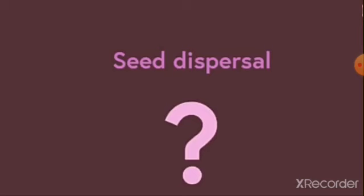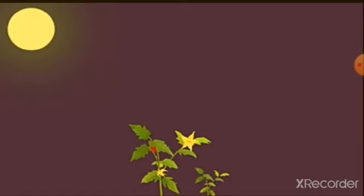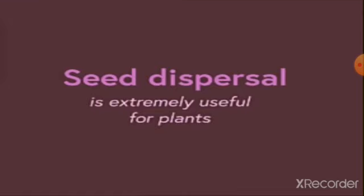Now, tell me, why do we need dispersal of seeds? What will happen if the seed from parent plant gets planted near it? Being near the parent plant will affect the growth and development of both plants. Why so? The two will start competing for sunlight and water. That is the reason why seed dispersal is extremely useful for plants.